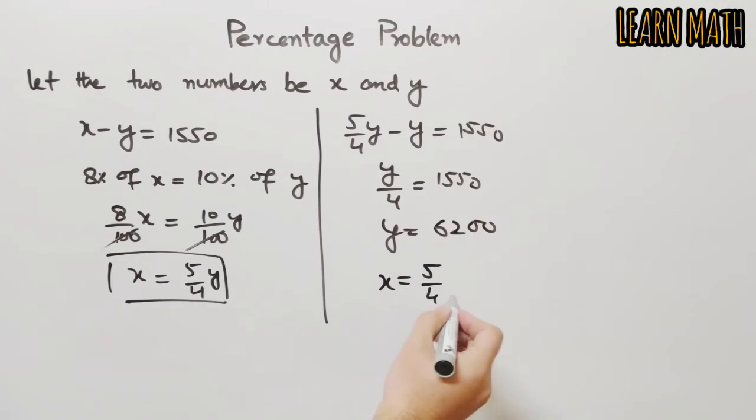So now we will put y is equal to 6200 in this, so x is equal to 5 by 4 into 6200. We will multiply 5 by 4 with 6200 and we will get 7750. So this is the value of x.